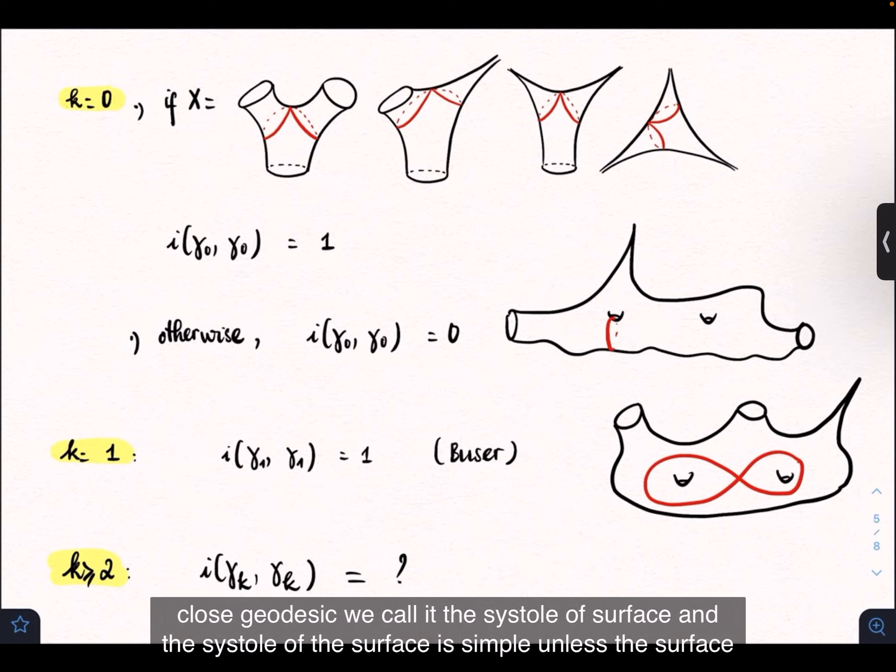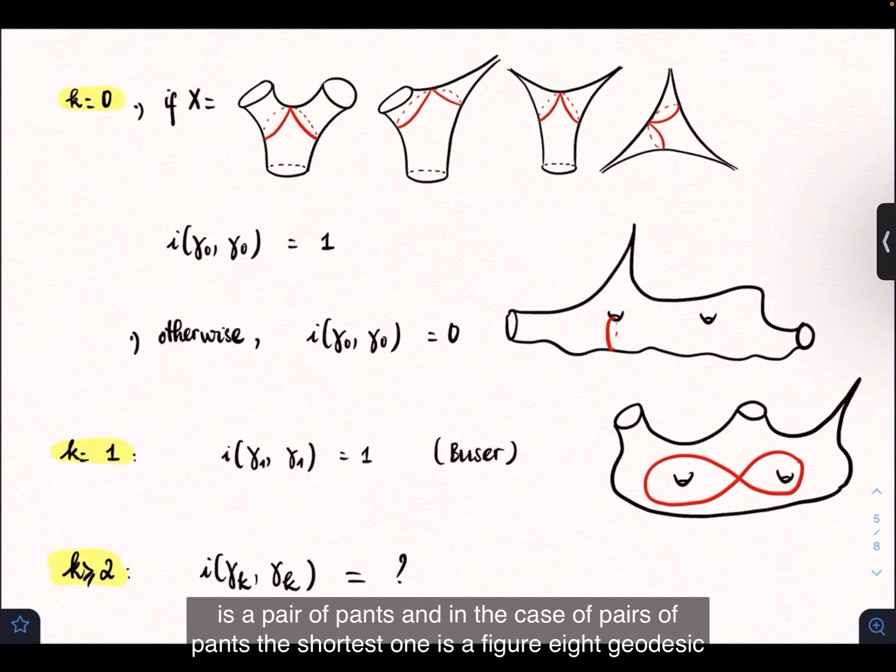In this case, the shortest closed geodesic is called the systole of the surface. The systole is simple unless the surface is a pair of pants. In the case of a pair of pants, the shortest one is a figure-eight geodesic.